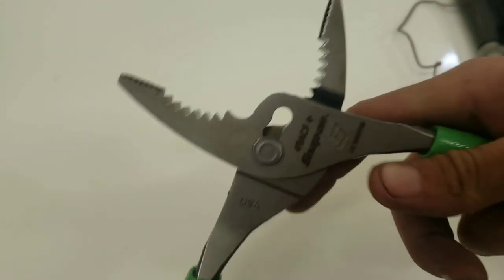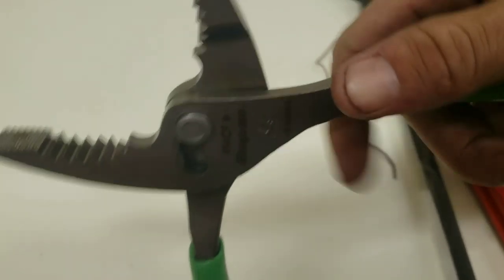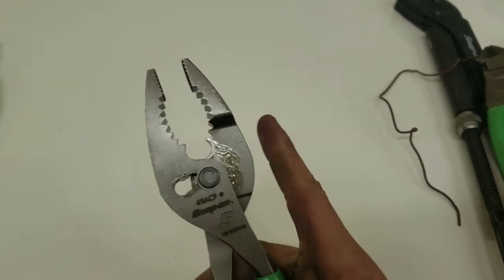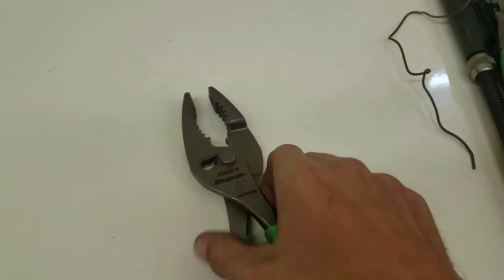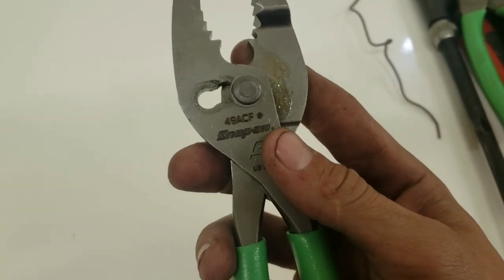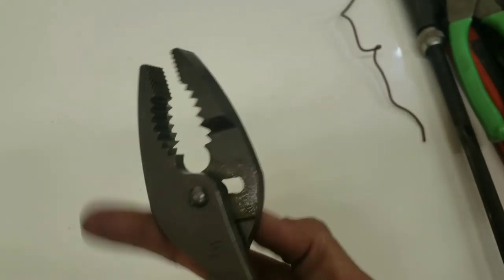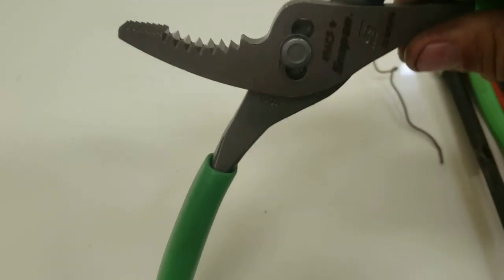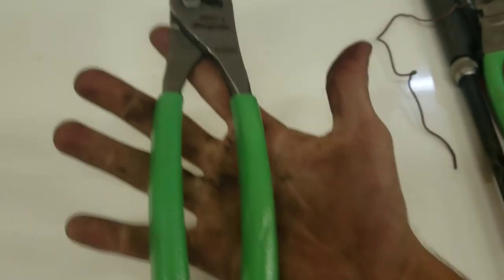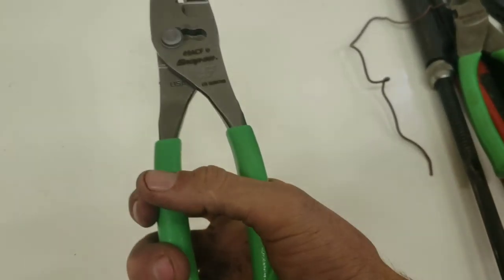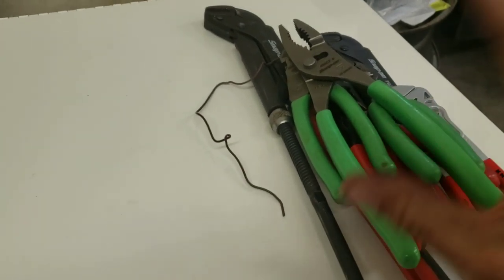Next are the slip joint pliers, the 49ACF. These are some of my favorites - they open up a decent size. I've got this pair, plus one bigger and one smaller, and a mini set. Made in USA. If you've got Snap-on pliers, you probably have this set. They have the same grip - I'd love to know if anyone else makes this grip style.